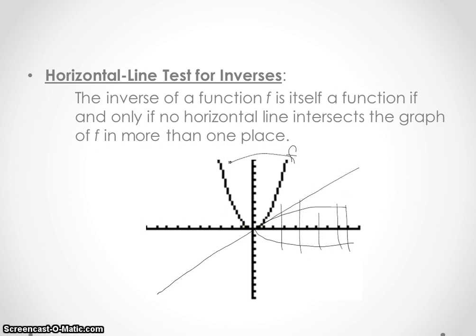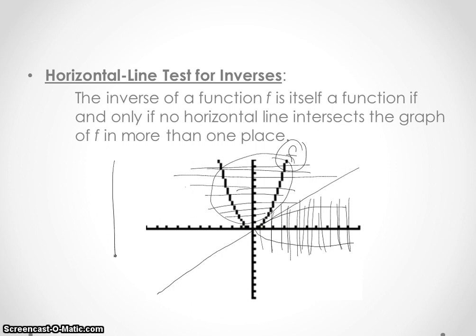But how could we tell from our original function that it was going to fail the vertical line test? Well, essentially if we swung this back up here it would then be a horizontal line going through this parabola. Notice how my lines are drawn connecting the sides here kind of like guitar strings. So essentially if we have the original graph and we test with a horizontal line, that will tell us if the inverse is going to pass the vertical line test.